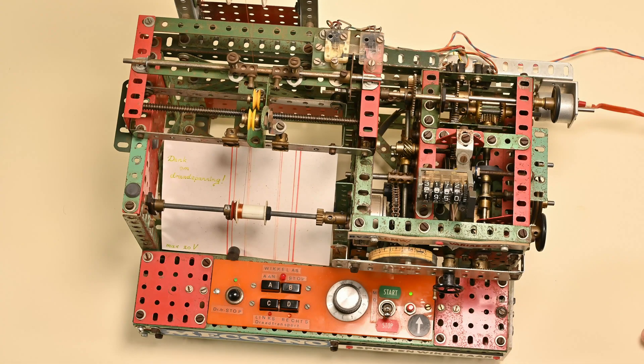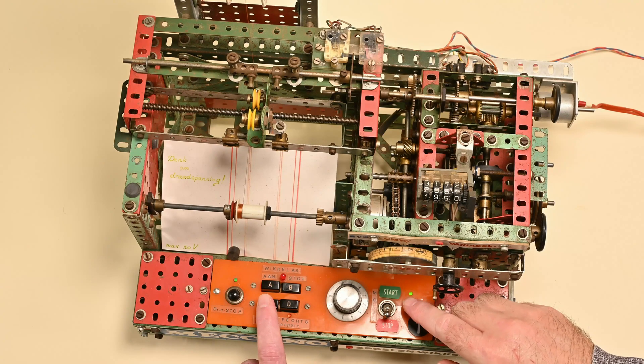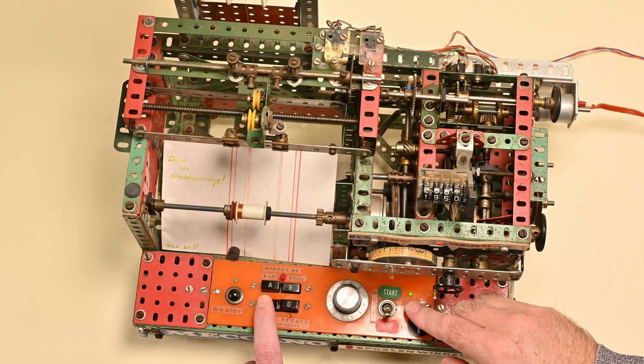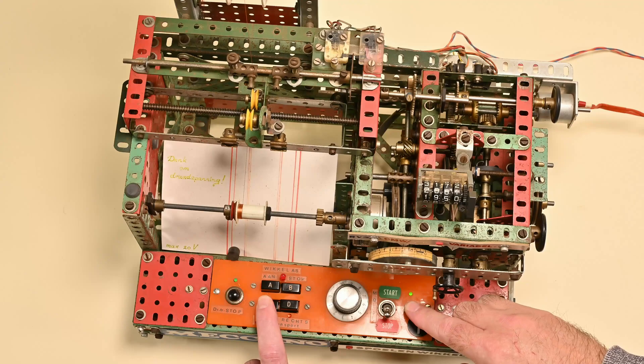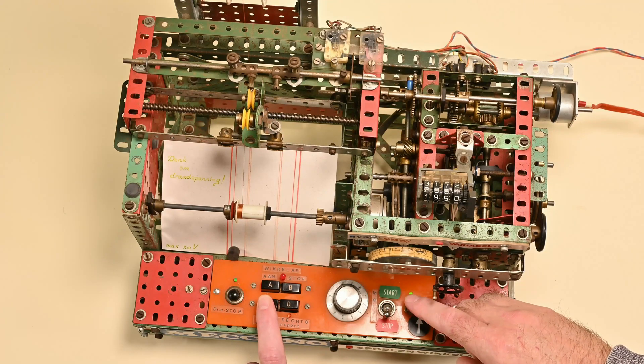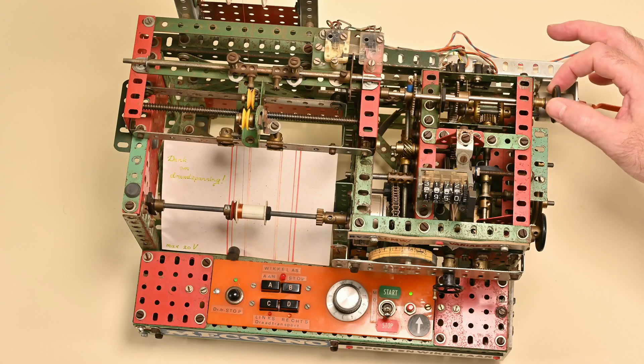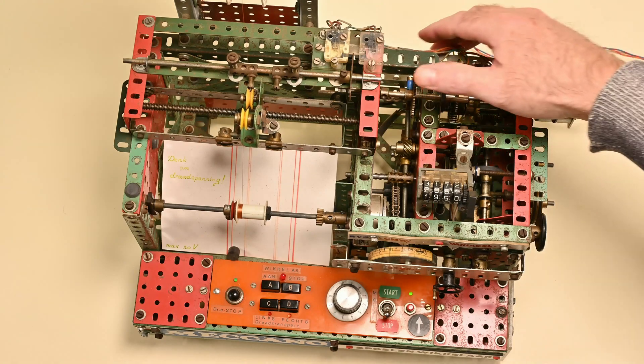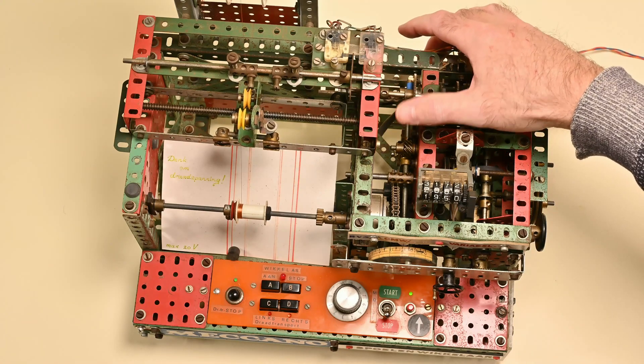So, how does the machine operate? There are several axles you can turn manually. The first one is the axle connected to the coil itself. The second one is the spindle. They can be operated manually but they can also be operated by the motor.